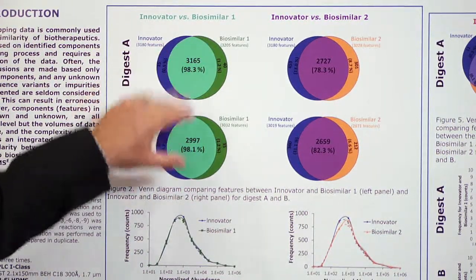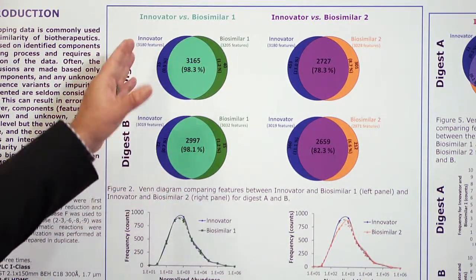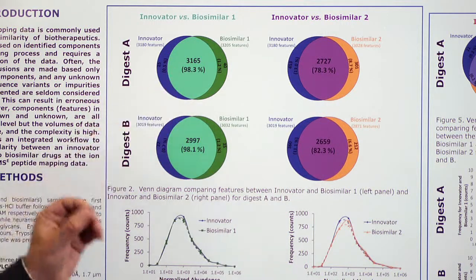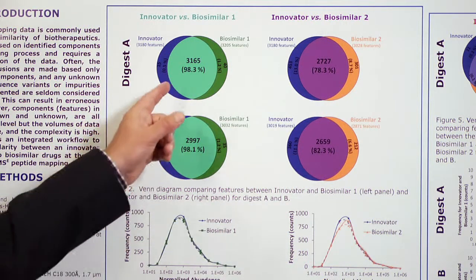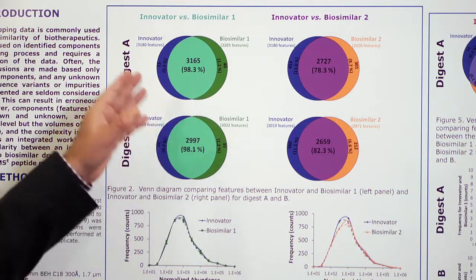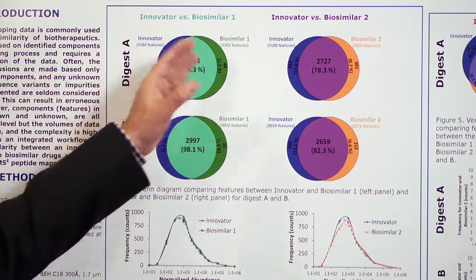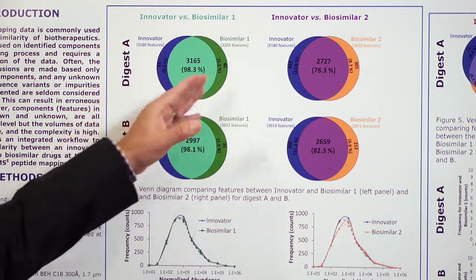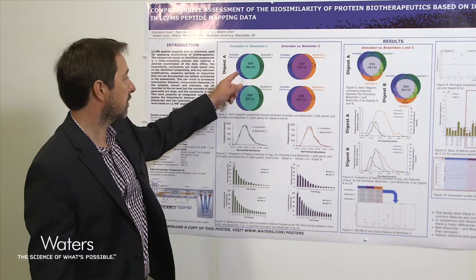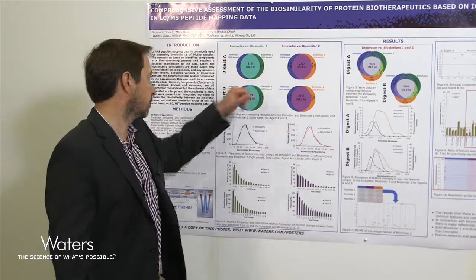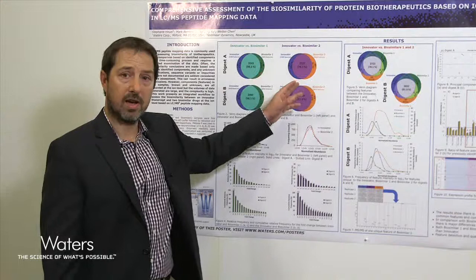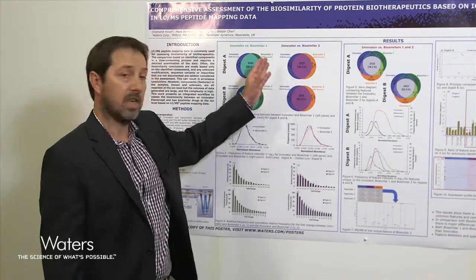If you look at the left panel, which is the innovator versus biosimilar one, you see the number of features that are common — more than 98% are common between the innovator and biosimilar one — and you have very few unique features: 0.5% for the innovator and 1.2% for the biosimilar.